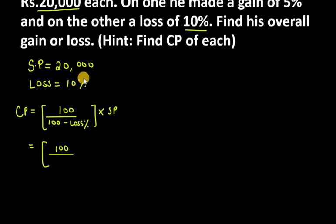So 100 over 90, and SP is Rs. 20,000. Cancel one zero and you will get your answer as Rs. 2,00,000 over 9.